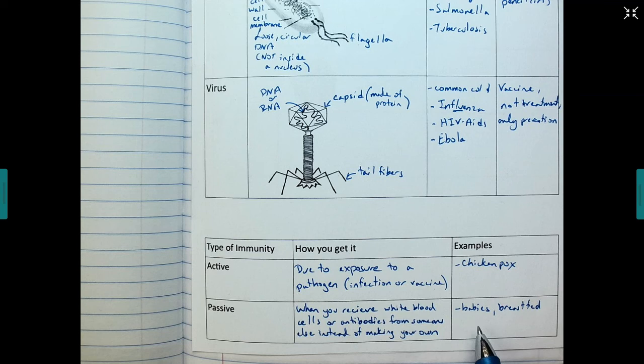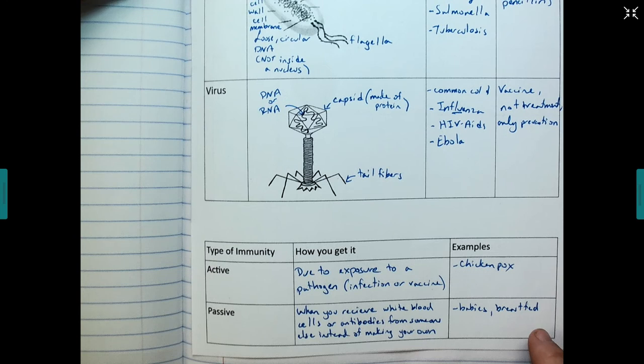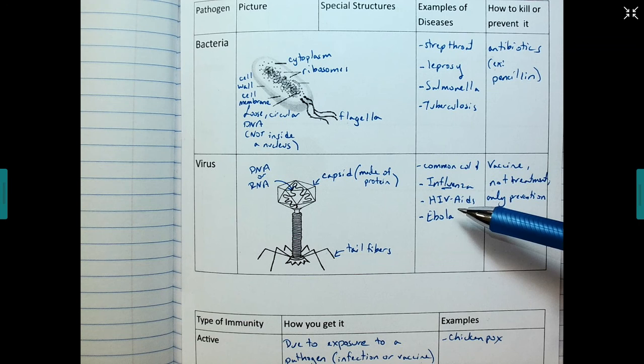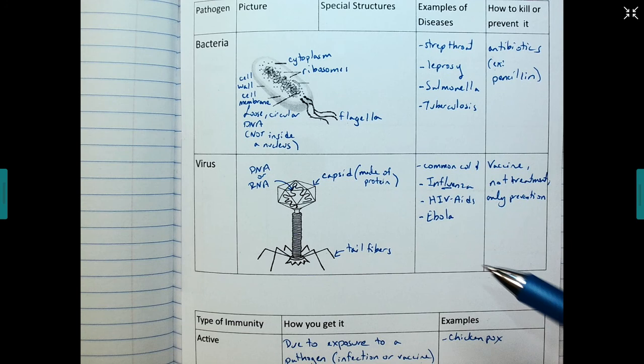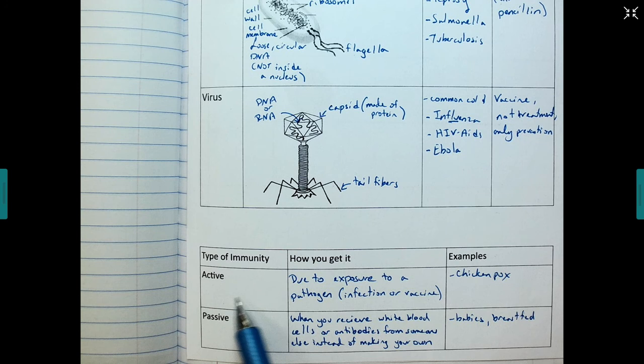So that's an example of passive immunity where whatever antibodies is in mom, she will pass those antibodies through her breast milk to the baby. And then this creates a passive immunity. So if mom has the antibodies for any of these diseases, she can pass those antibodies on to the baby. Now, the baby has not made these antibodies themselves. So the baby's only protected for a short period of time. Active immunity is long-lasting immunity because you will remember those pathogens because your body has already made the antibodies.